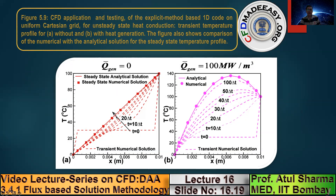The solid line corresponds to the analytical solution and the symbols correspond to numerical solutions on 12 grid points. An excellent agreement between numerical and analytical solutions is shown for both without and with heat generation cases, demonstrating testing and code verification for 1D unsteady heat conduction. After completing 1D conduction, we go to 2D conduction for the flux-based solution methodology. For the simplest form of grid generation — uniform grid — we draw equispaced vertical and horizontal lines.